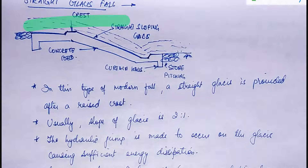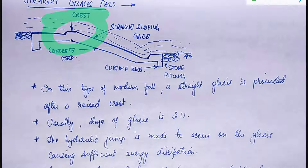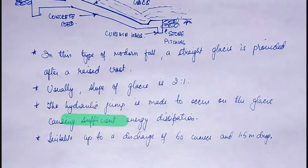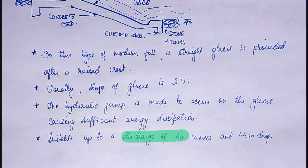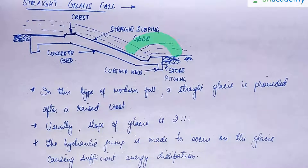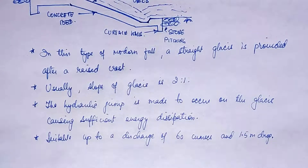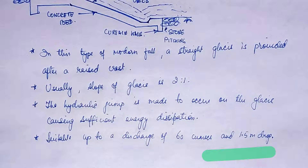This type of modern fall is called a straight glacis fall, where a straight glacis is provided after a raised crest. The slope of the glacis is usually 2:1. The hydraulic jump is made to occur on the glacis, causing sufficient energy dissipation. It is suitable for a discharge up to 60 cumecs maximum and drops of 1.5 meters.